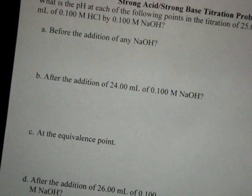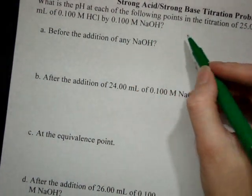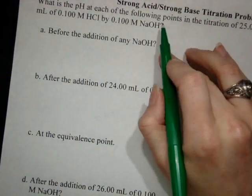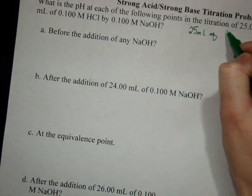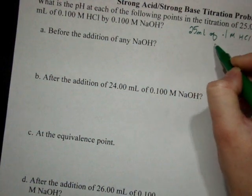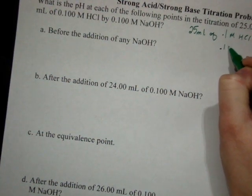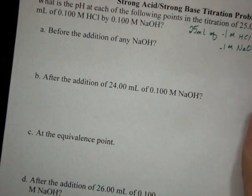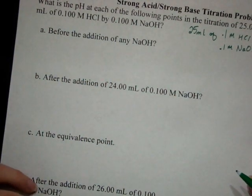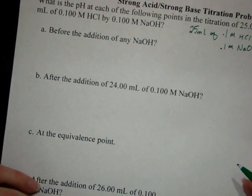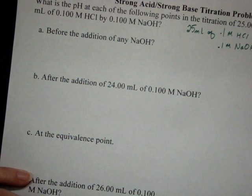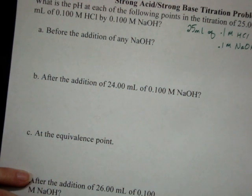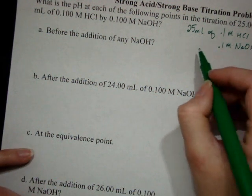All right, exercise one, a strong acid, strong base titration. So we have what we are looking at is titration of 25 milliliters of 0.1 molar HCl with 0.1 molar NaOH. So strong acid and strong base. So what we have to look at here is essentially, first thing I like to do with any of these problems is figure out what the equivalence point is supposed to be. So you can use stoichiometry to do that. That's probably the easiest thing.